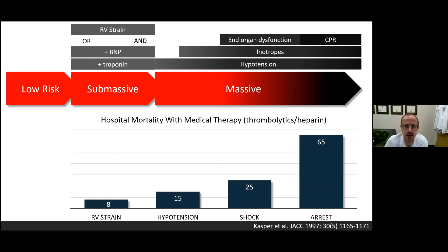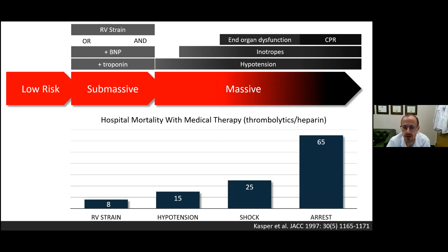By way of review, pulmonary emboli can be categorized into low risk, submassive, and massive. What distinguishes massive pulmonary embolus is the presence of hypotension. This is actually a pretty wide spectrum of patients with massive PE — those with mild hypotension not requiring inotropes, no end organ dysfunction, no chest compressions — and those people, when treated with thrombolytics and anticoagulation, have an in-hospital mortality of approximately 15 percent.